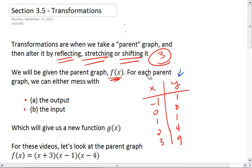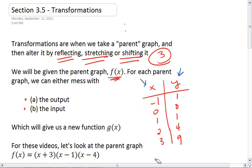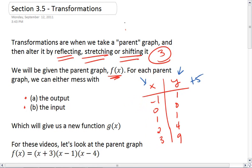We could also maybe multiply all of our outputs or all of our inputs by 2, or we could add 5 to all of our outputs.